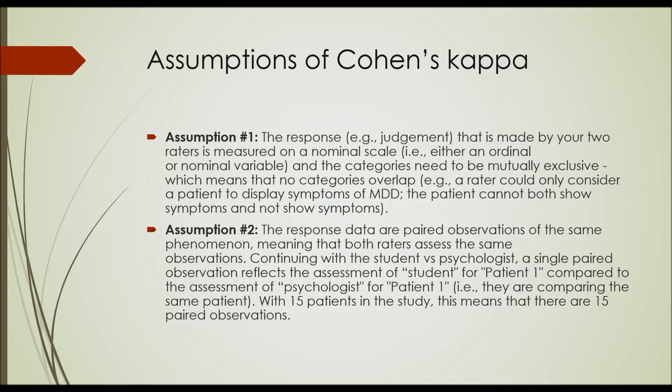I'm going to go through some assumptions that your data has to meet in order to correctly perform the Cohen's Kappa analysis. The first assumption is that the response — for example, the judgment — made by your two raters is measured on a nominal scale, either an ordinal or nominal variable, and the categories need to be mutually exclusive, meaning no categories overlap.